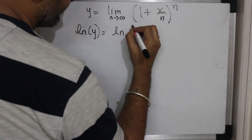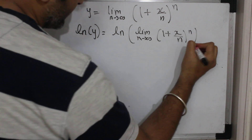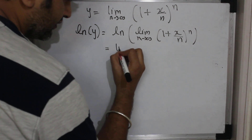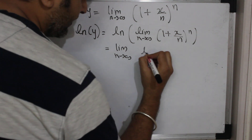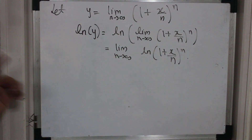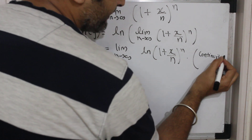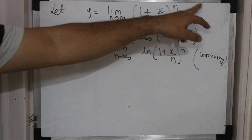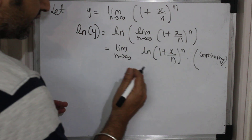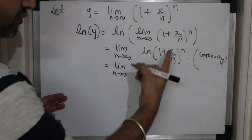...this is ln of the limit as n goes to infinity of (1 + x/n) raised to n. Now, can I interchange this limit and ln of (1 + x/n) raised to n? The answer is yes — you can see the theorem on continuity I did previously. Because of that continuity theorem, you can interchange the limit and ln.